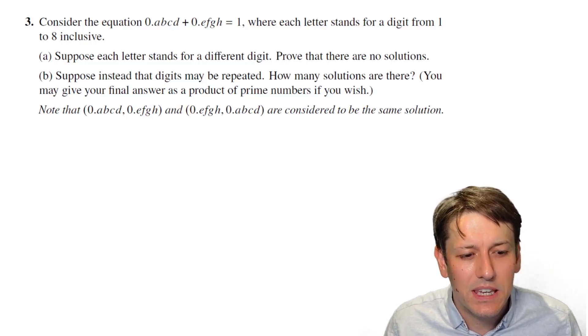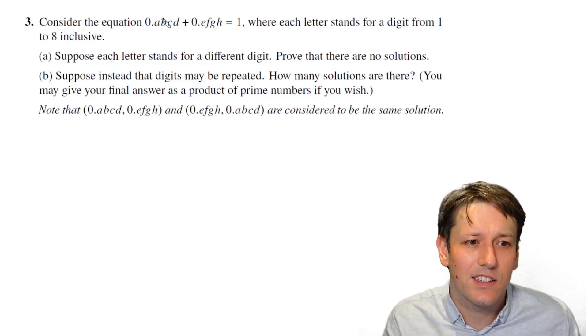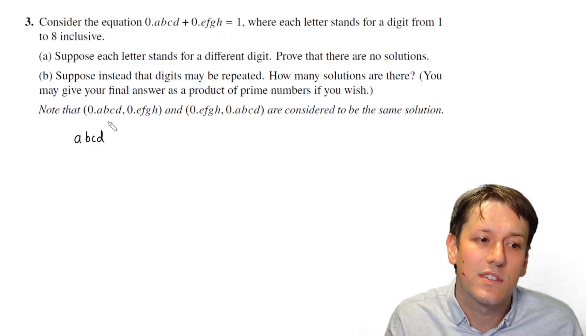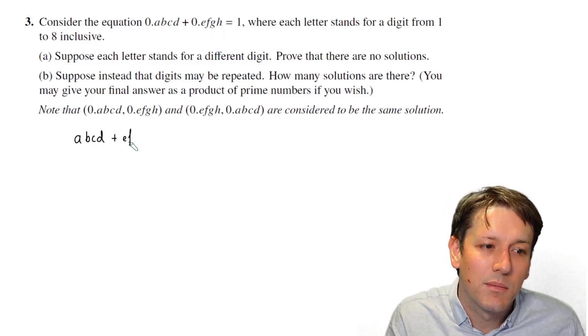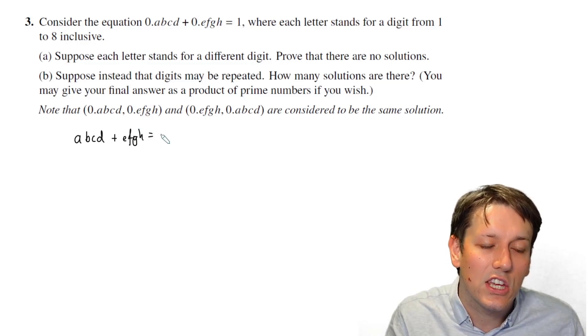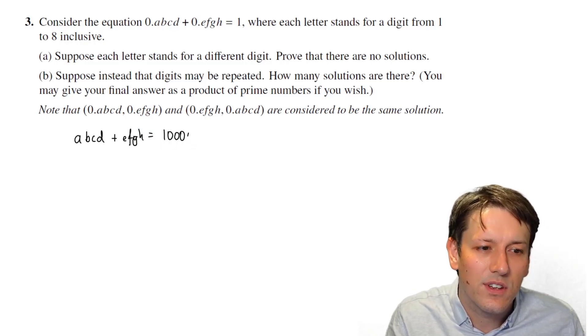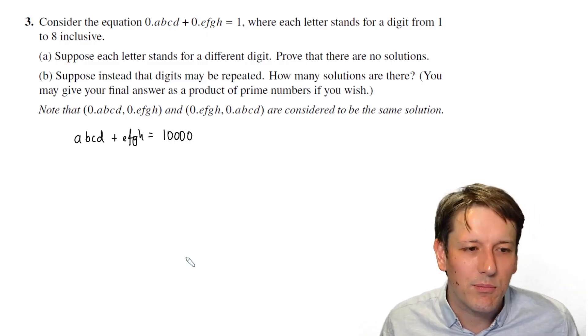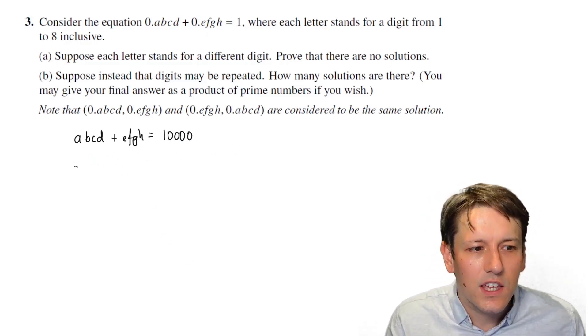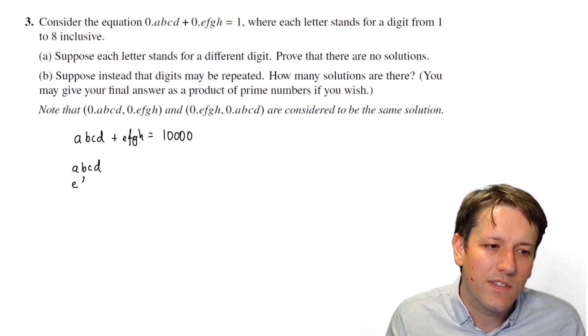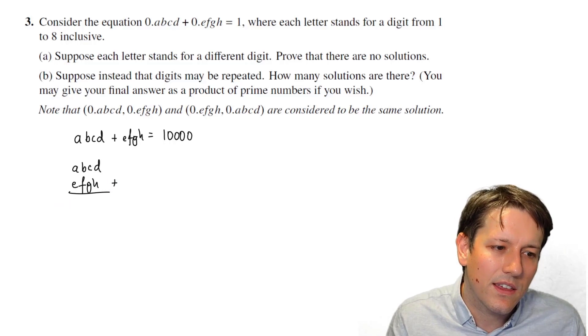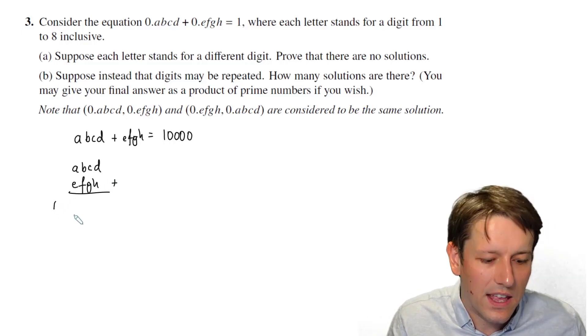So I think to begin with, the first thing I'd like to do here is just to multiply this equation by 10,000 and say that this problem is equivalent to saying ABCD plus EFGH is equal to 10,000. And it's always easier to work with whole numbers than decimals. It's exactly the same problem. And if we write this as a sum, as if I was doing it like this, and I add them together, and I know I've got to get 10,000.